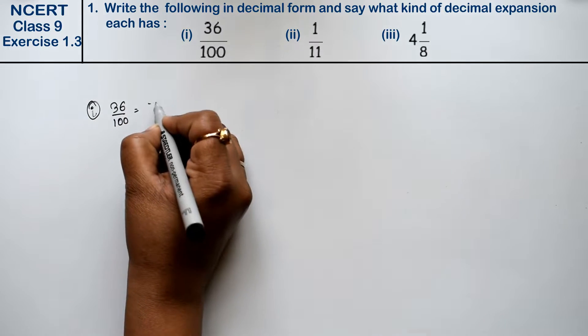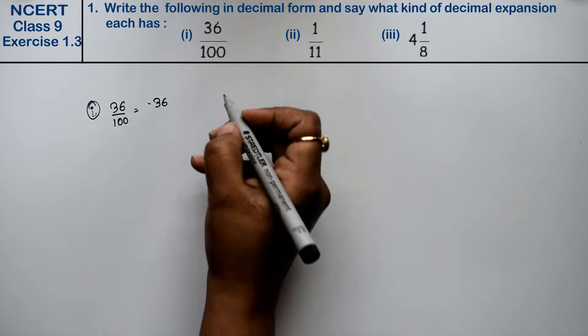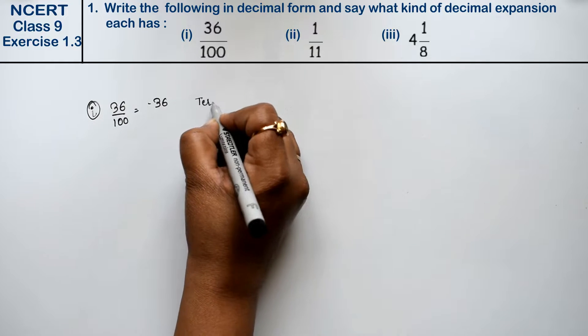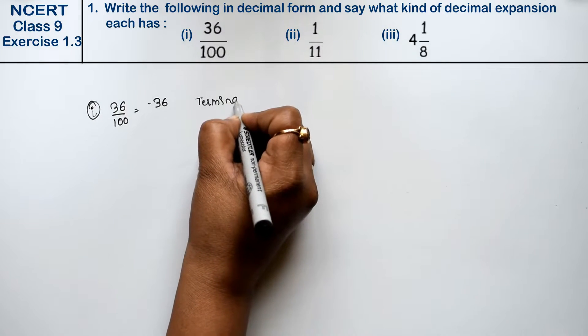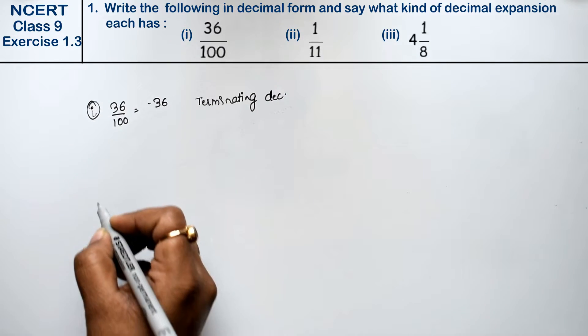Friends, what can we write this? Point 36. So what happened to us? It's a terminating decimal. Right friends.